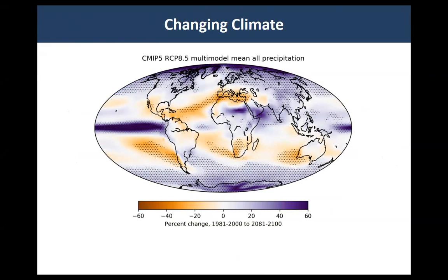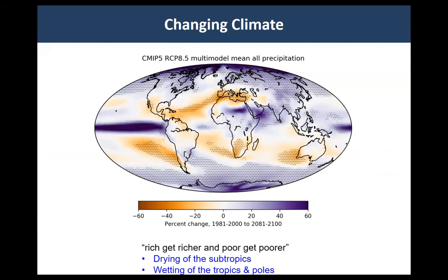This is a pattern we're already observing — enhanced precipitation around the tropics and the poles, and pretty severe drying in the subtropics. Essentially, the rich get richer: if you've already got moisture, you're going to get more; if you're dry, you're going to dry further, and that drying is going to shift further poleward.